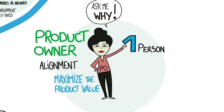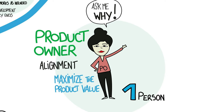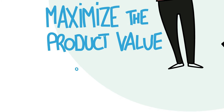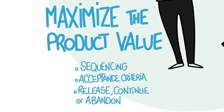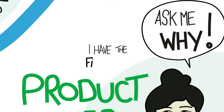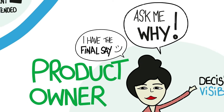Scrum solves the alignment problem by designating one person who is authorized to make decisions about the product: the product owner. Her decisions are visible in the content and sequencing of the product backlog and in the increments produced every sprint. These decisions include sequencing, acceptance criteria, and whether to release the product, continue development, or even abandon the effort. The product owner can decide what will be done first and can have final say on the definition of acceptance criteria and whether an item is done.